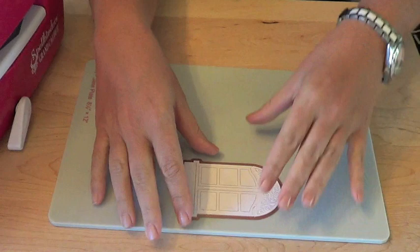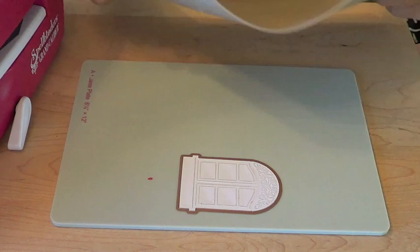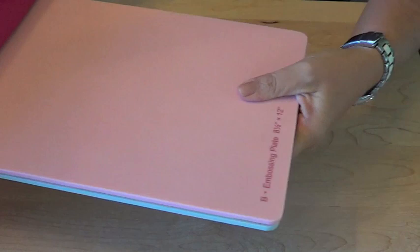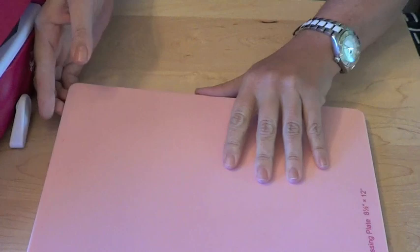Now Spellbinders is known for its embossing features on its die templates. So let's go ahead and emboss this design too. I'm covering my template with my embossing mat and my embossing plate. I'm going to run my sandwich through the Grand Caliber machine to get those fine embossing details.